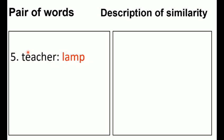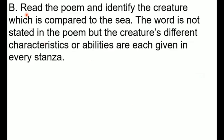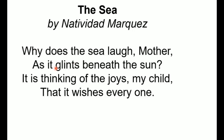Number five: teacher is being compared to a lamp — teacher is to lamp. Description: a teacher is like a lamp because, like a lamp, a teacher can give the light of knowledge to students. Now read the poem and identify the creature being compared to the sea. The word is not stated in the poem, but the creature's different characteristics are given in each stanza.